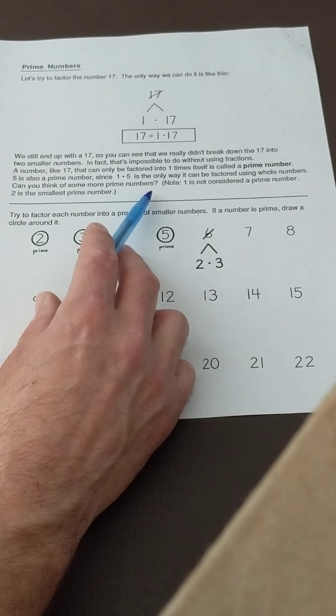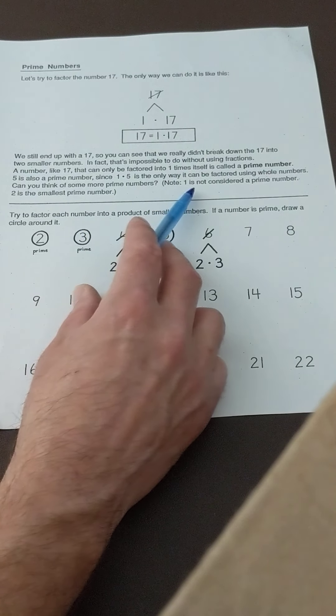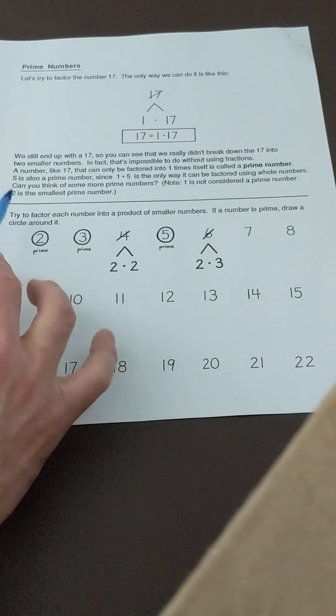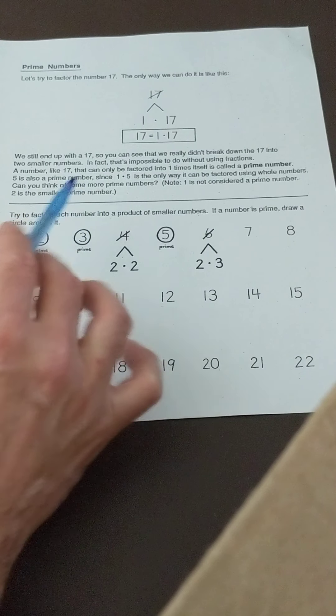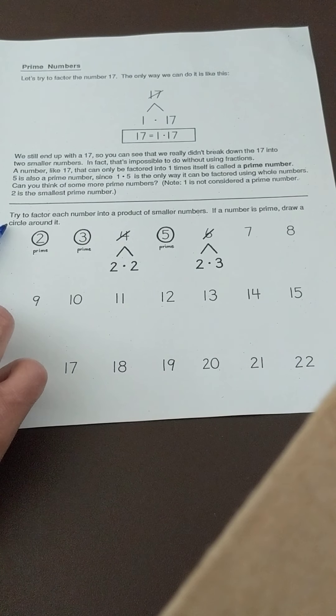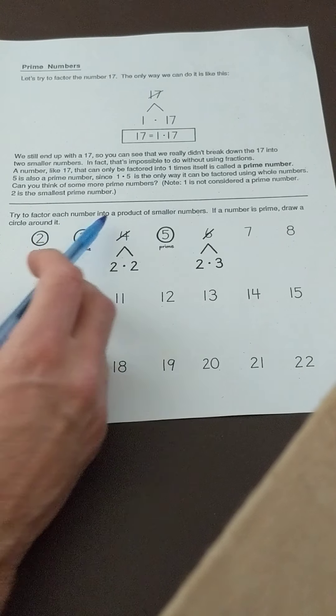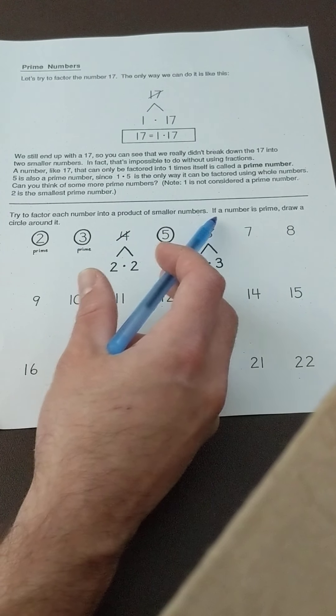Can you think of some more prime numbers? No, 1 is not considered a prime number. 2 is the smallest prime number. All right, try to factor each number into a product of smaller numbers. If a number is prime, draw a circle around it.